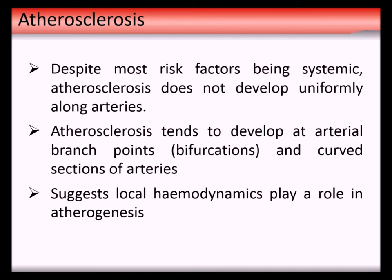A lot of the risk factors for atherosclerosis are systemic - things like diabetes, smoking, poor diet, and not enough exercise affect large amounts of your arteries. But atherosclerosis doesn't develop just randomly; it develops in very defined places. It actually starts to develop where you have branch points and curvature in the artery, which suggests that hemodynamics - the blood flow pattern - plays a role in its development.